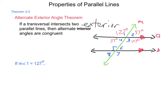Using corresponding angles, angles 1 and 5 are congruent, so angle 5 is 127 degrees. Angles 2 and 6 are corresponding, so angle 6 is 53 degrees. Following either linear pairs or corresponding positions, angle 7 is 127 degrees and angle 8 is 53 degrees. So when you have parallel lines and a transversal, knowing even one angle lets you solve for all missing angles using corresponding angles, alternate interior and exterior angle theorems, and linear pairs.